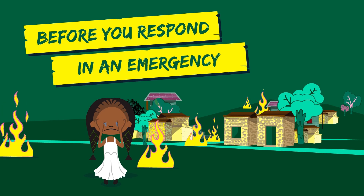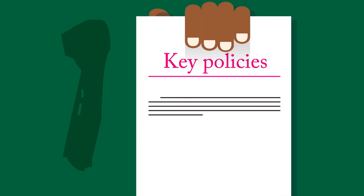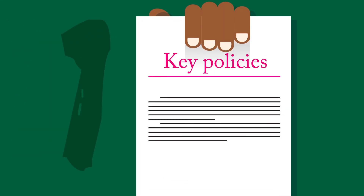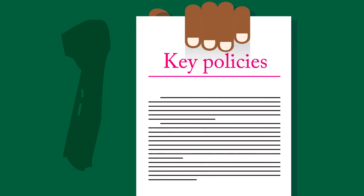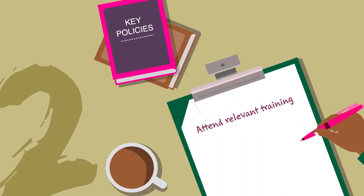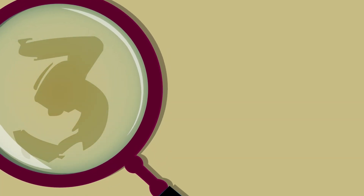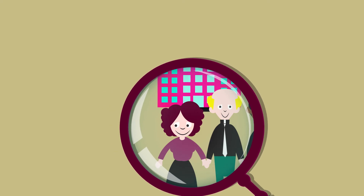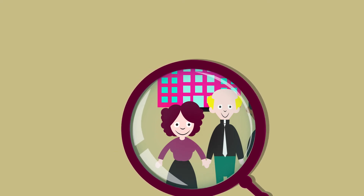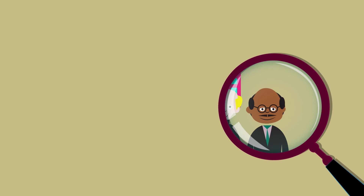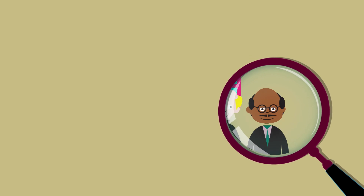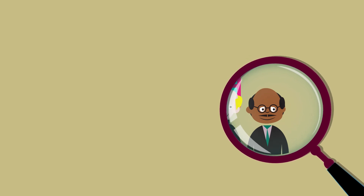Before you respond in an emergency: 1. Familiarise yourself with key policies such as minimum standards for child protection in humanitarian action. 2. Attend relevant training. 3. Identify who the qualified and experienced child protection experts are. 4. Be wary of unregulated and self-appointed individuals.